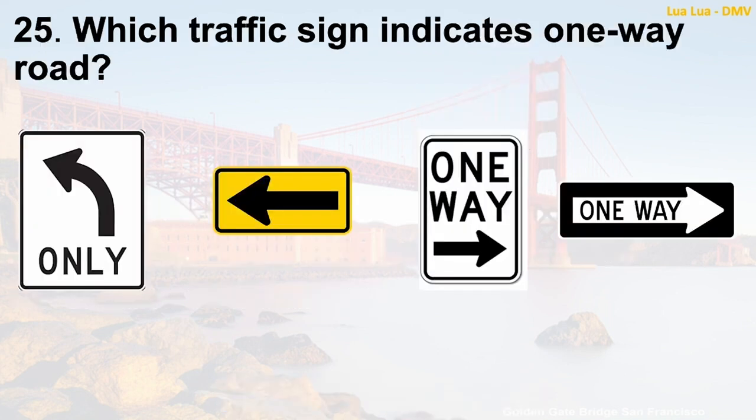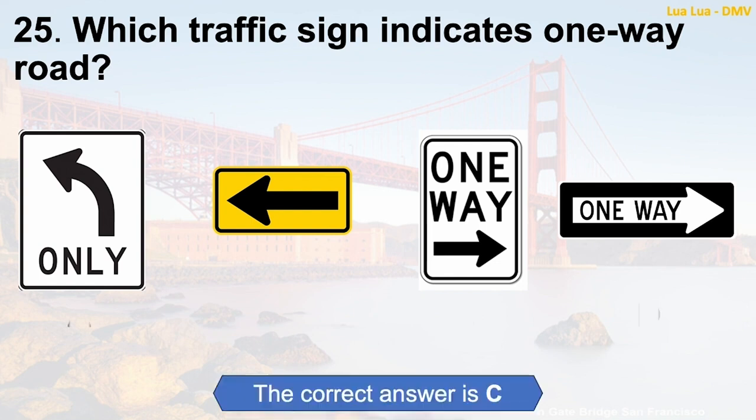Question 25: Which traffic sign indicates a one-way road? The correct answer is C.